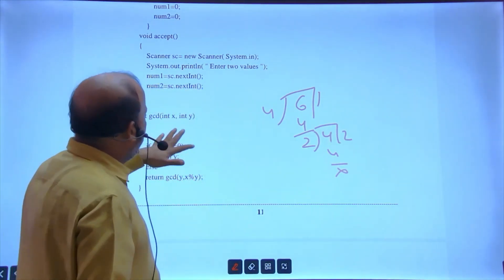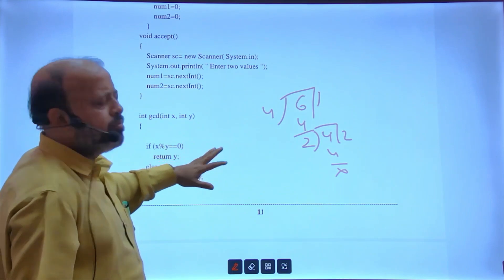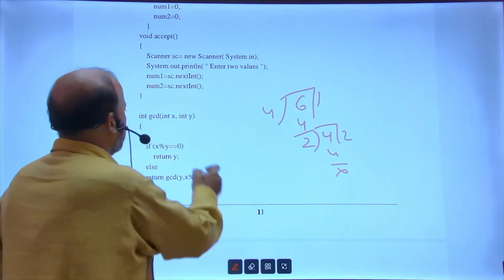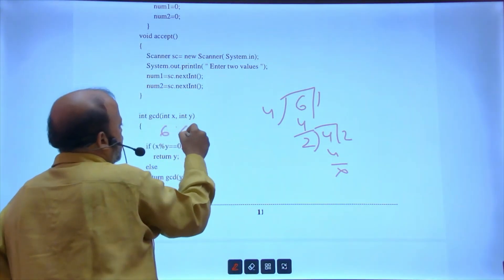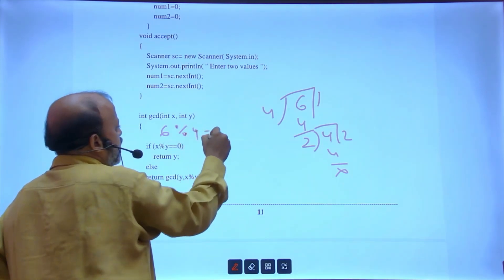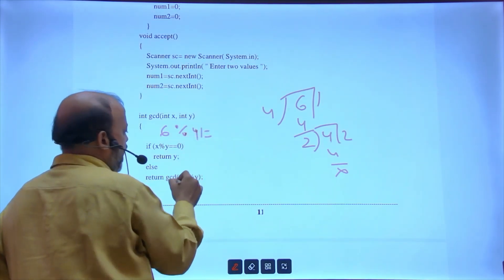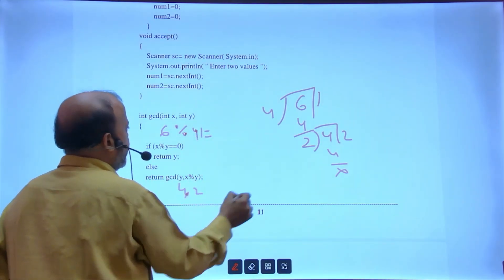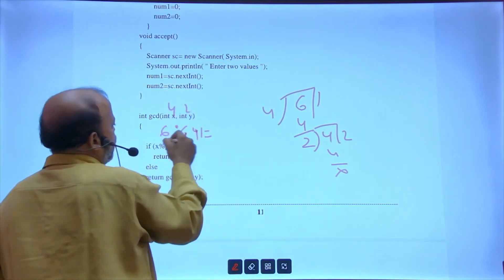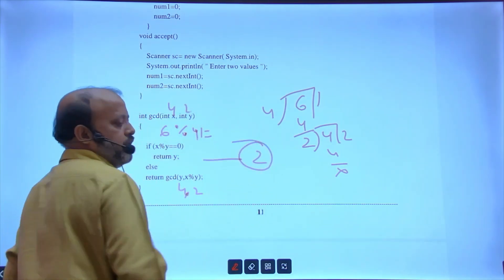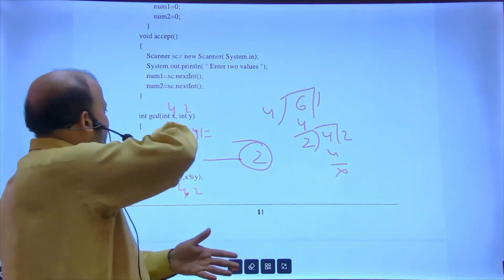Taken two numbers. If you can remember this method. Say 6 and 4 is there. 4 ones are 4, 2 twos are 4, so that is implemented. Now I have not calculated maximum or minimum. Whatever you see, it's going to work. 6 mod 4.